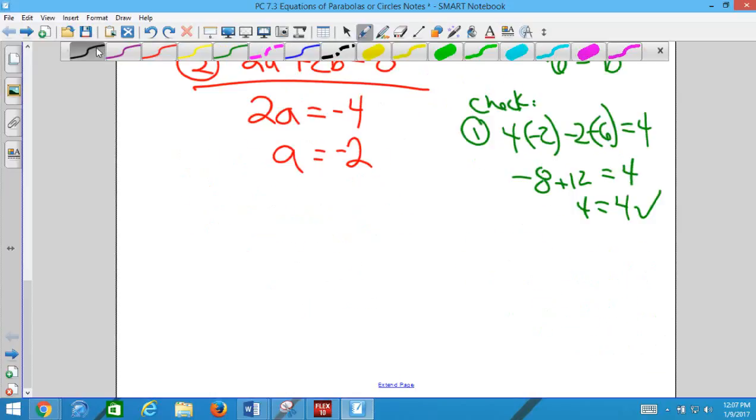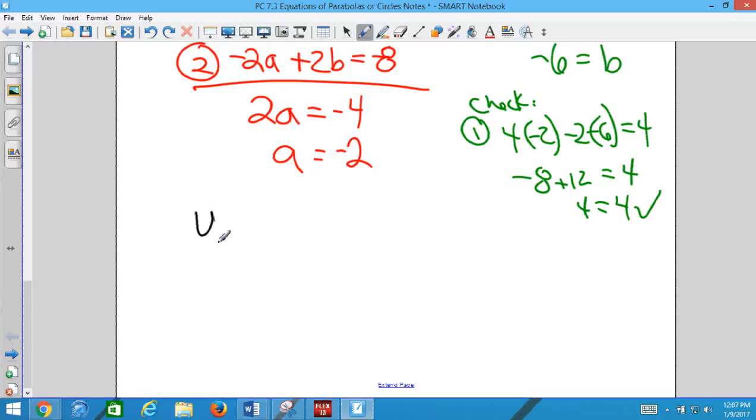The question is not asking what it was asking on Friday. We're not trying to find where three equations intersect. We're actually trying to find the equation of the parabola. So, we're going to write it into that y = ax² + bx + c. So it's y = -2x² - 6x + 1.